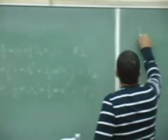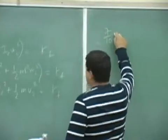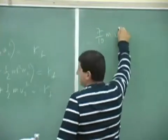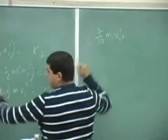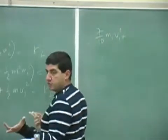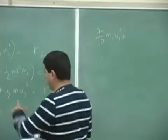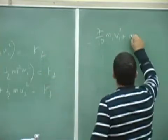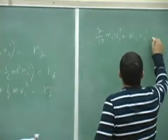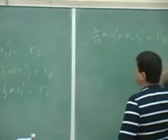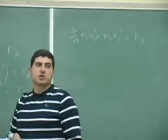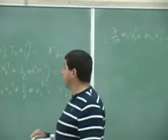So seven-tenths m1 v1 squared plus, and then this one, half and half, gives you just itself, right? Total one. So m2 v2 squared. Because k final.